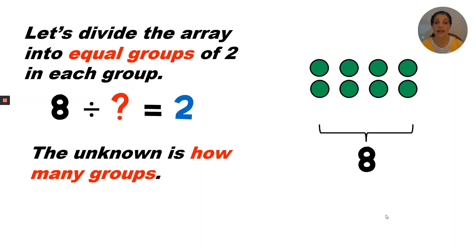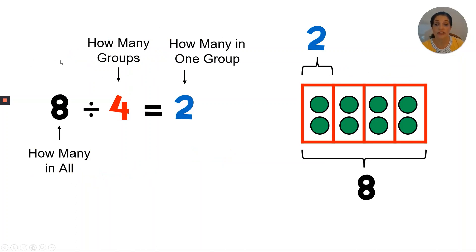Let's divide the array into equal groups of two in each group. The total number is the first number in a division equation. The number of groups is always the second number in a division equation. After the equal sign is the quotient, and that tells me how many in each group. In this case, the unknown is how many groups. I took my array and divided it into four boxes — that tells me how many in each group. There are four groups, and now I can see that there are two in each group. So eight divided by four equals two.